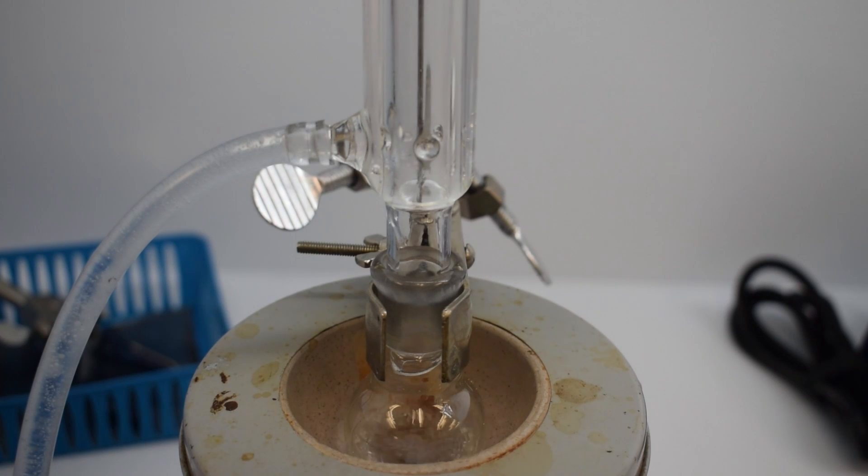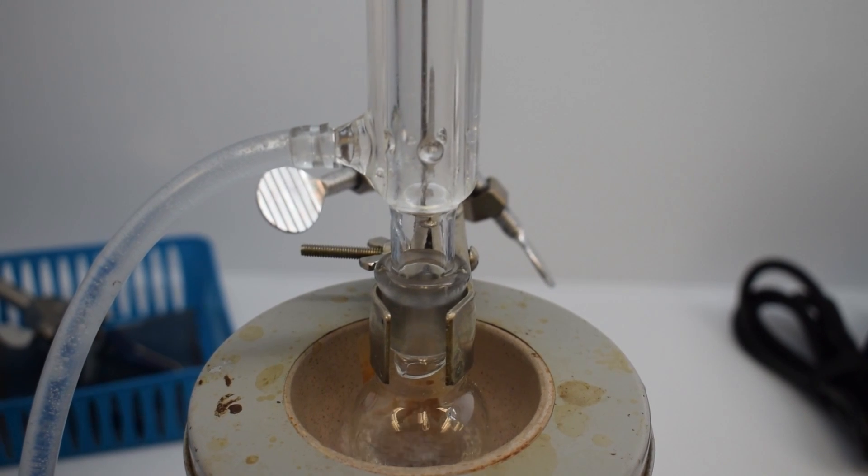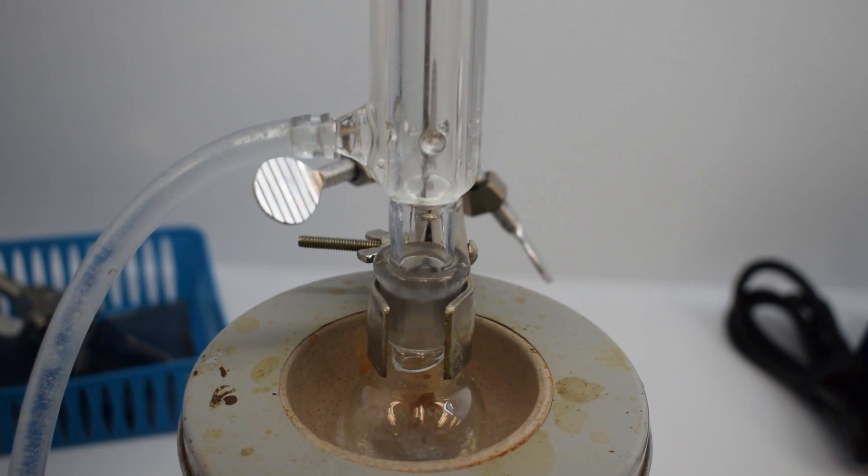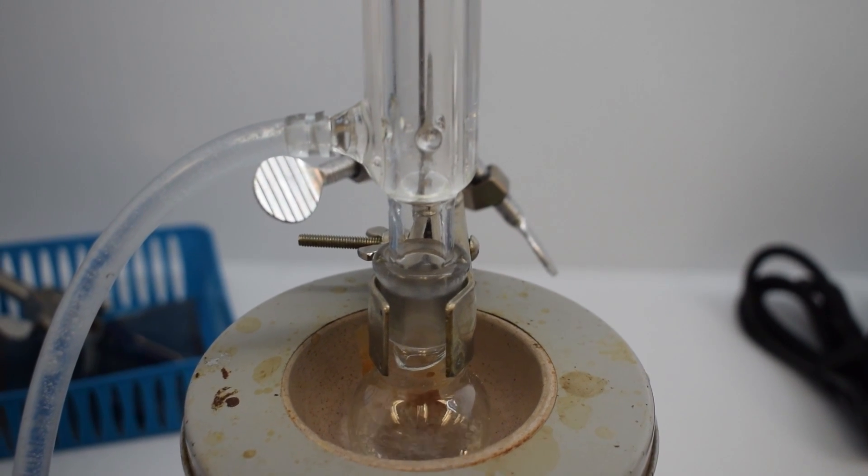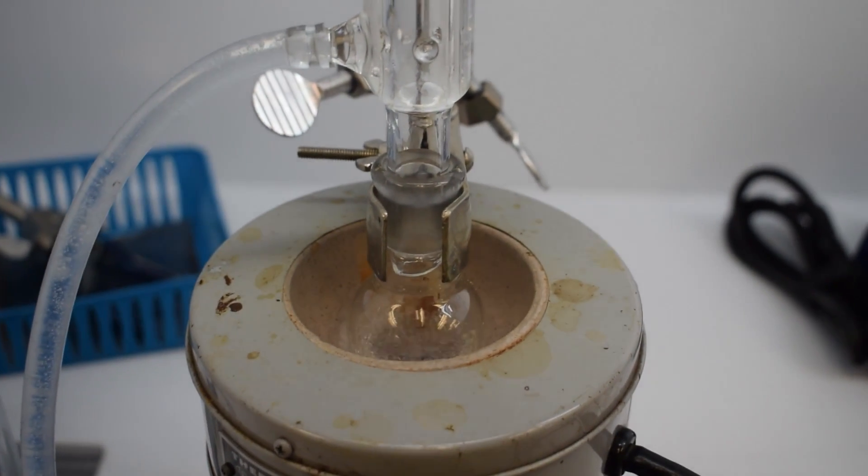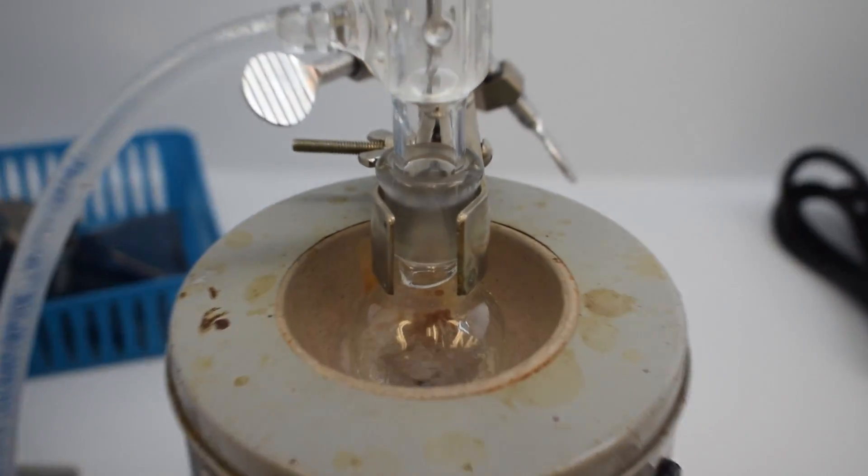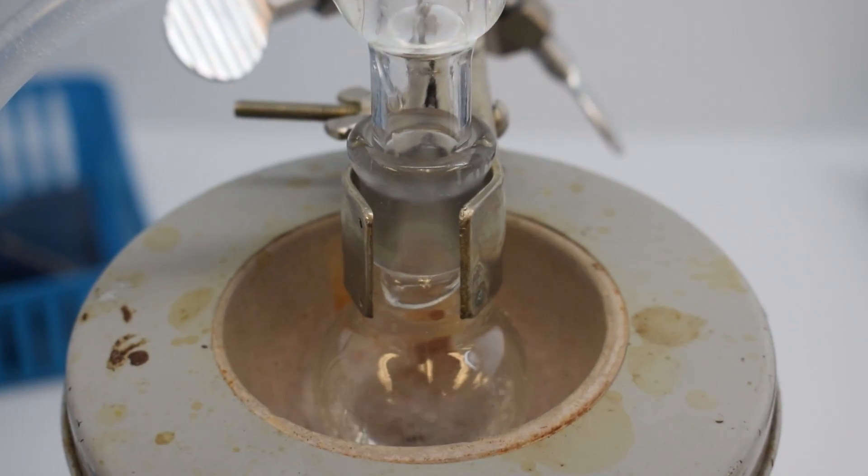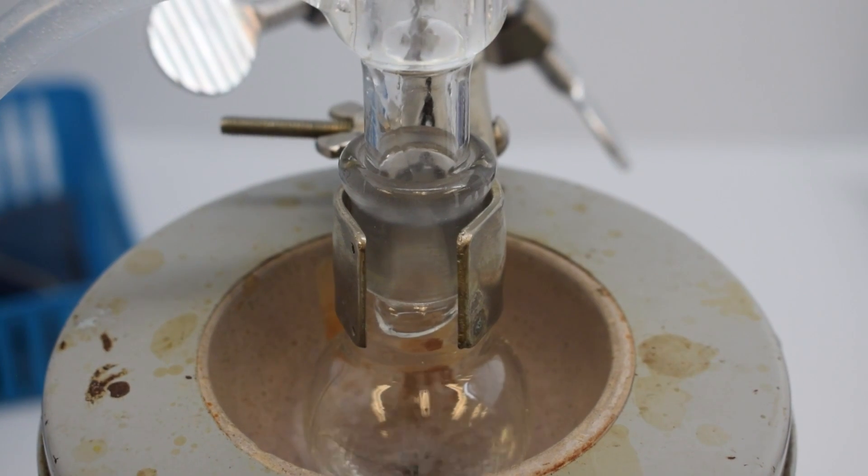Any water created as a byproduct of this reaction will also vaporize, but it will rise to the top of the condenser and reach the calcium sulfate drying tube where it will be removed from the reaction, pushing the equilibrium towards the product side.